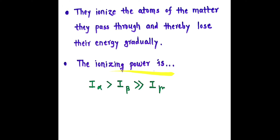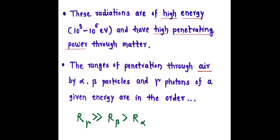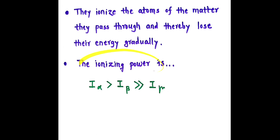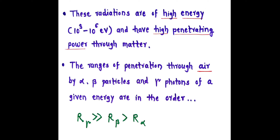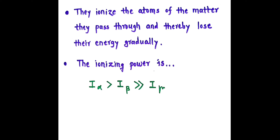The ionizing power is given as: ionizing power of alpha is greater than ionizing power of beta, and it is very, very greater than ionizing power of gamma. If we compare the ranges of penetration and ionizing power, they are in an opposite order — the range of gamma is greater than beta is greater than alpha, while ionizing power of alpha is greater than beta is very, very greater than gamma.